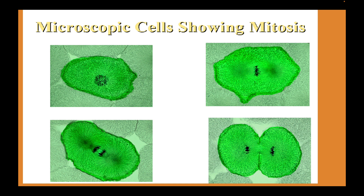Here are some microscope shots showing mitosis. Top left is prophase, top right is metaphase, bottom left is anaphase where chromosomes are separating, and then telophase where cytokinesis occurs and a nucleus is reintegrated into each cell. You want to know the events associated with each of these phases.